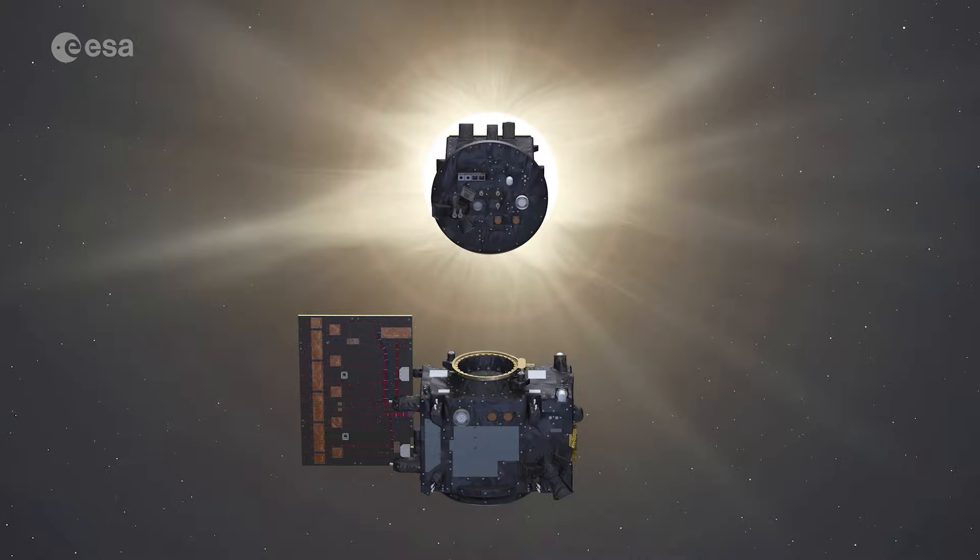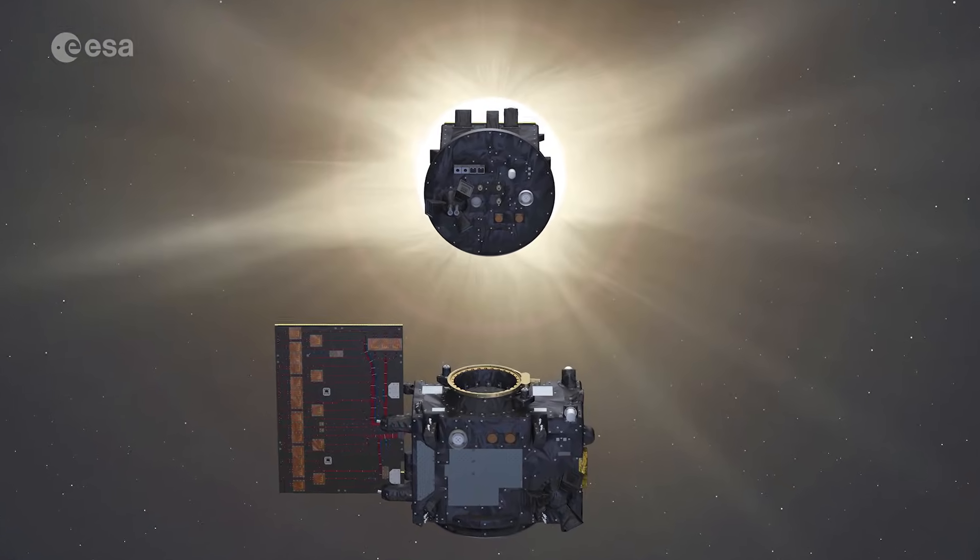Prober 3 has just made history by doing exactly that, creating the first-ever artificial solar eclipse in orbit.